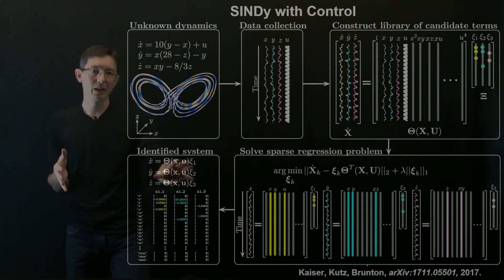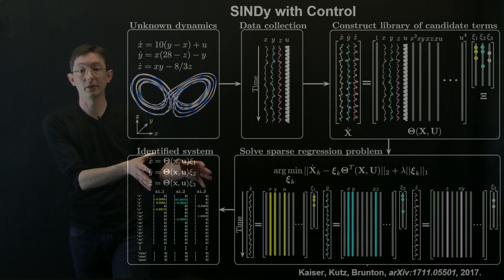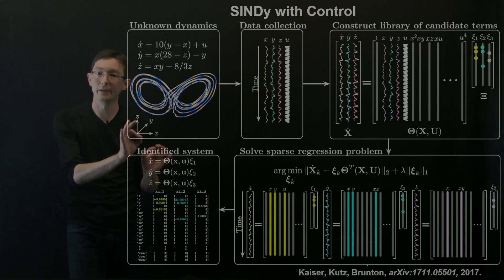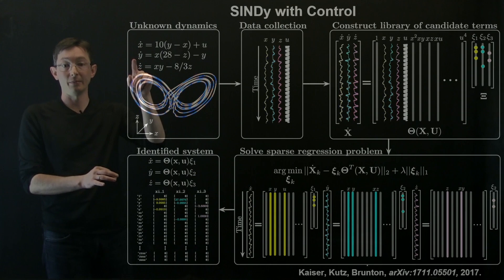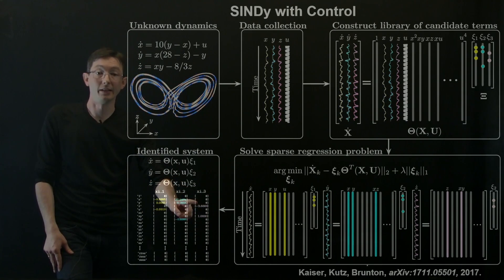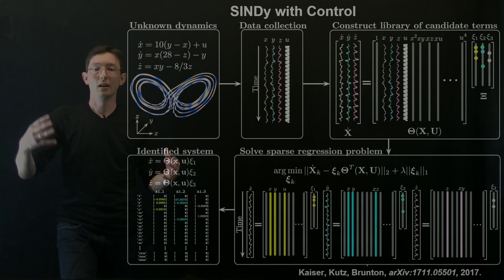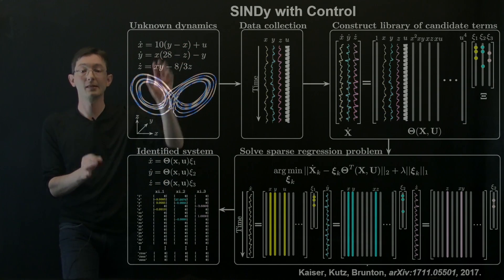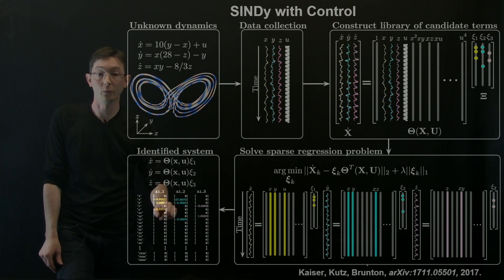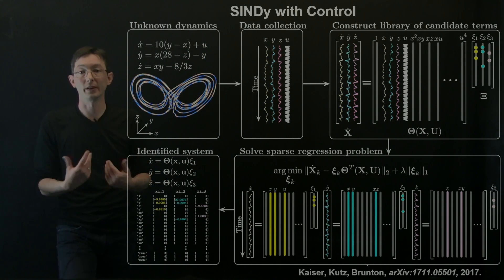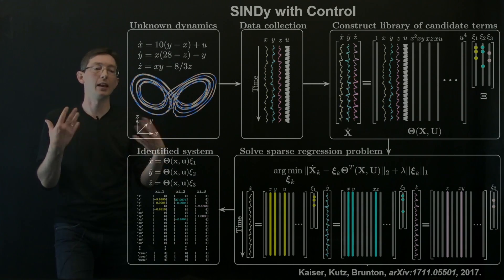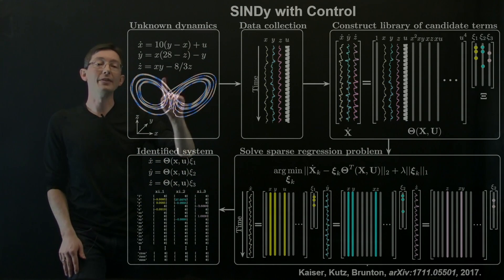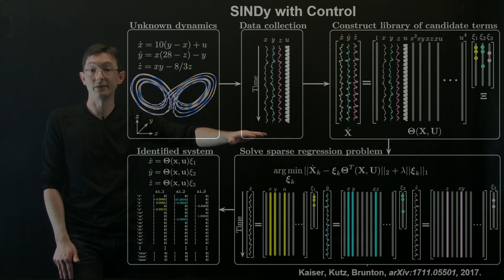The cool thing about using these SINDYc models for model predictive control is that unlike other non-linear system identification, because these are sparse models with only the fewest necessary terms required to describe the measured dynamics, they are actually pretty fast to simulate. You're not simulating really complicated deep neural nets or black box models. These are very efficient to simulate because they have the fewest terms required to explain the dynamics, and they're also highly interpretable — you can read off which terms are active and interpret what the non-linearities are, find fixed points, and so on. These are especially good for model predictive control because they're very fast, and they can also be identified using very small amounts of data compared with neural networks.